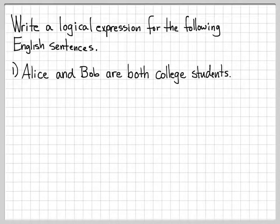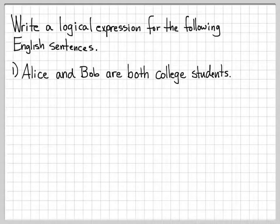For instance, let's take this English sentence: Alice and Bob are both college students, and let's translate this into a logical expression. One of the things you have to do when working this type of problem is be very careful on how you introduce and define the symbols you're going to work with. In this case, we have Alice and Bob are both college students — that's the English sentence we want to represent as symbols.